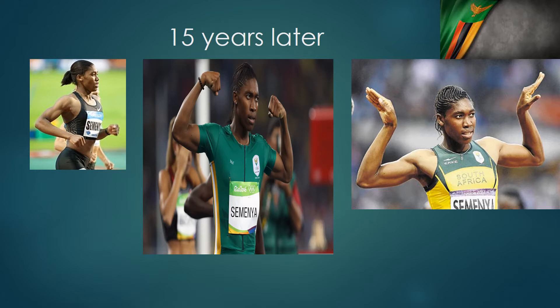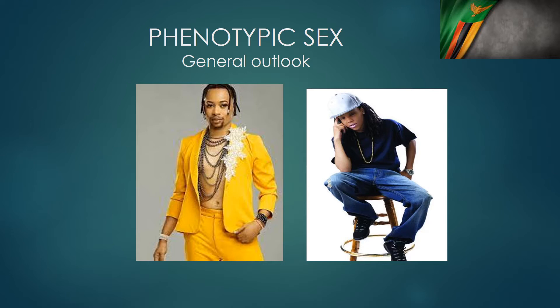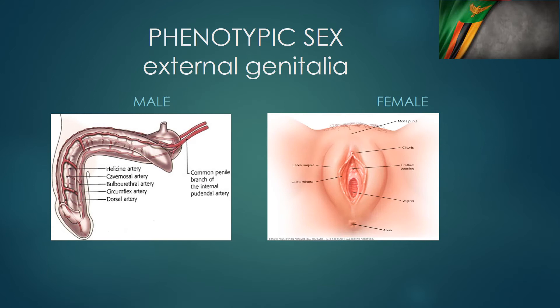Things might look different later. There are different ways of describing what sex somebody belongs to — it's not just showing the genitals. One type is phenotypic sex: the general outlook of a person. Usually when someone walks toward you, you have the general impression that this is a girl or a man walking toward you.